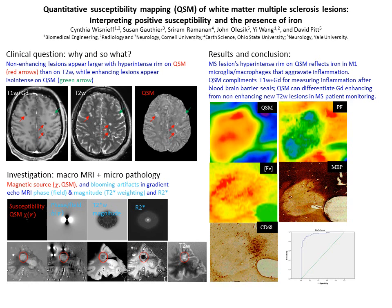Our paper deals with QSM application in multiple sclerosis. In our clinical patients, we found gadolinium-enhancing MS white matter lesions are iso-intense on QSM, while non-enhancing chronic active lesions are hyper-intense, typically having hyper-intense rims that are outside the lesion volume defined on T2-weighted imaging.